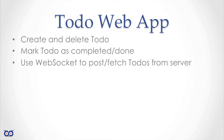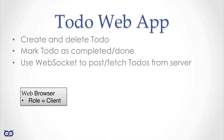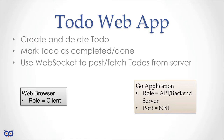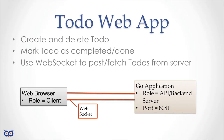We want to use WebSocket to fetch to-dos from the backend or post them to the server. So we'll have a web client — our web browser — and a Go application as our API backend. We can serve the web pages from the Go application or from a separate application. In this case we'll use a separate web server for the pages, and once those pages load in our browser, the browser will make a connection to our Go backend on a different port and set up a WebSocket.